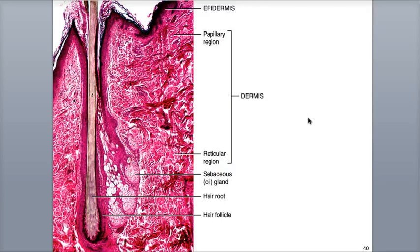Between the protein fibers of the dermis are a collection of accessory structures, including hair follicles, blood vessels and nerves, as well as various glands such as sudoriferous or sweat glands, and sebaceous or oil glands, which are often associated with the hair follicle.